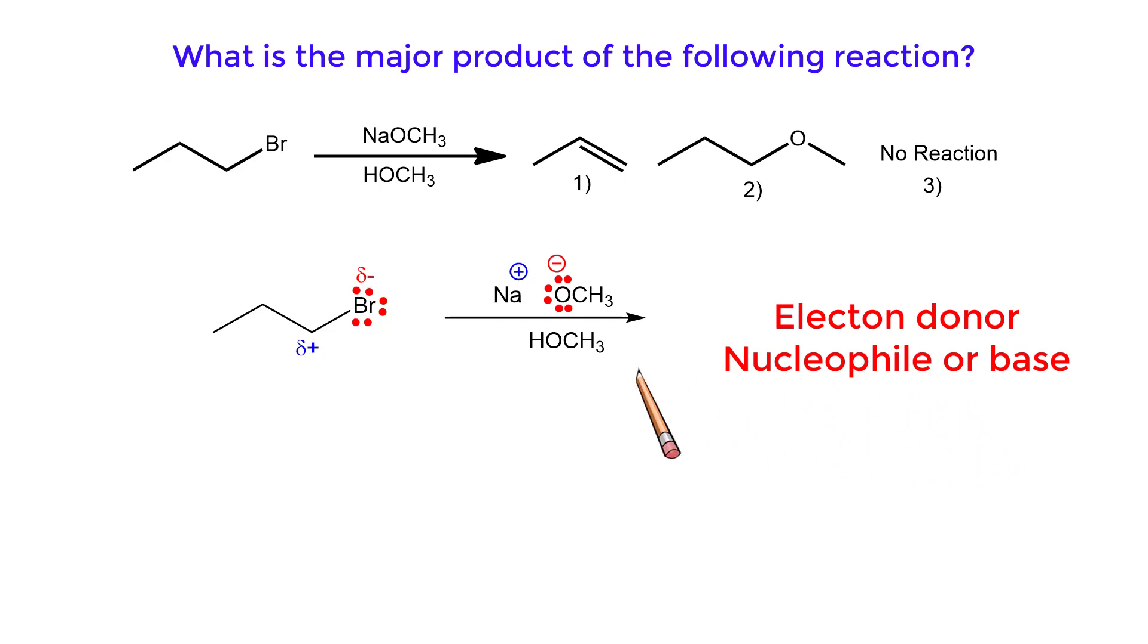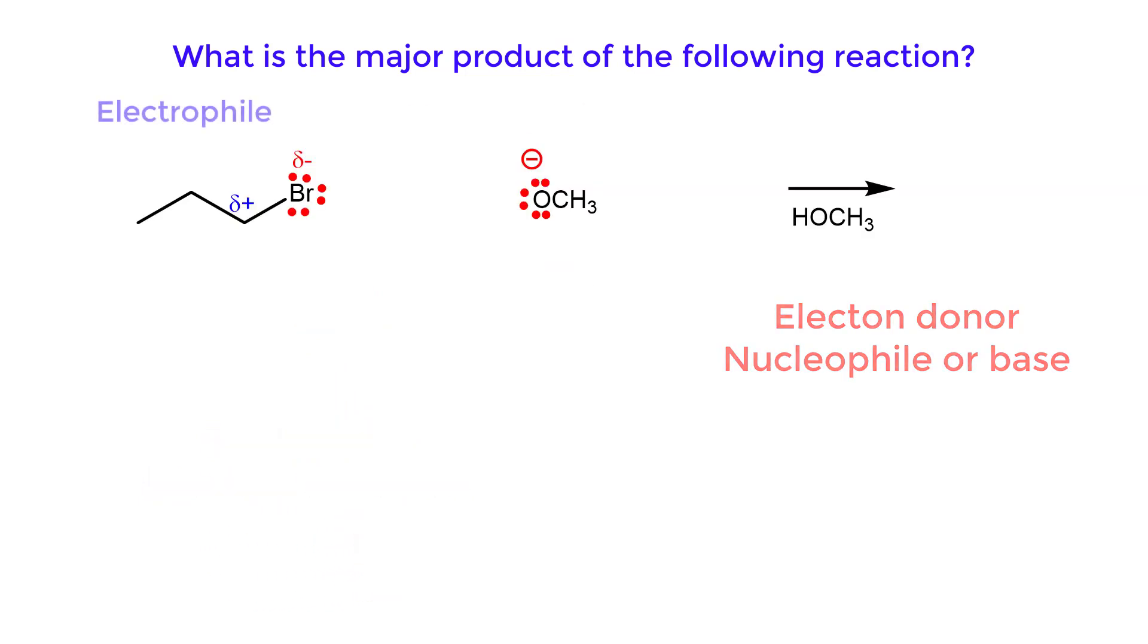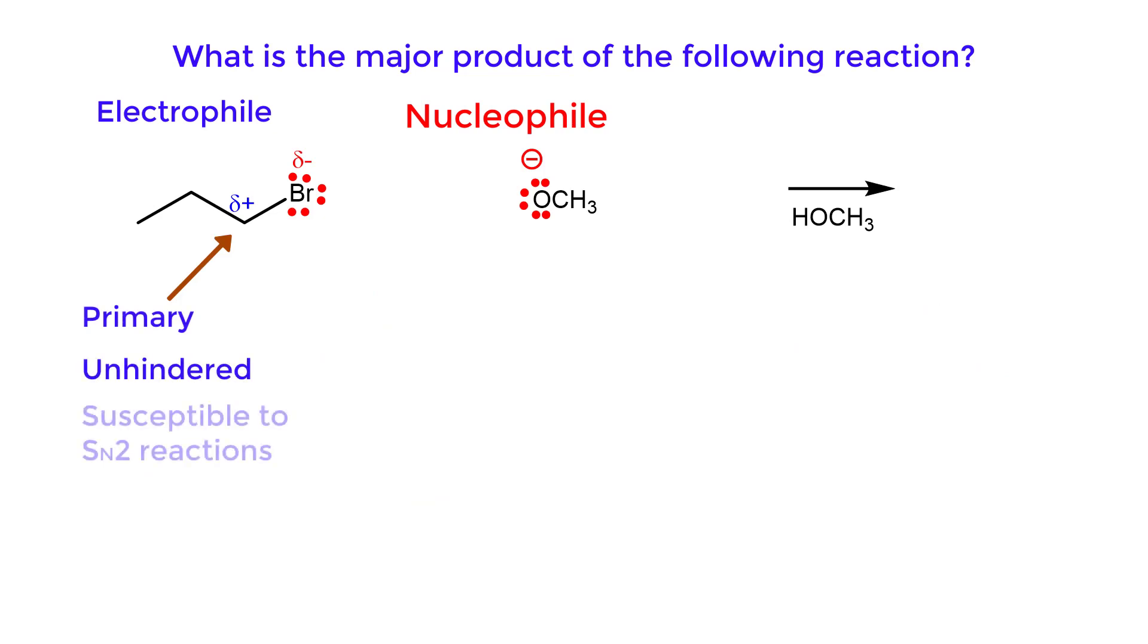The alkyl halide is the electrophile or electron acceptor. The electrophile is primary, unhindered, and susceptible to SN2 reactions. It will not form a primary carbocation.